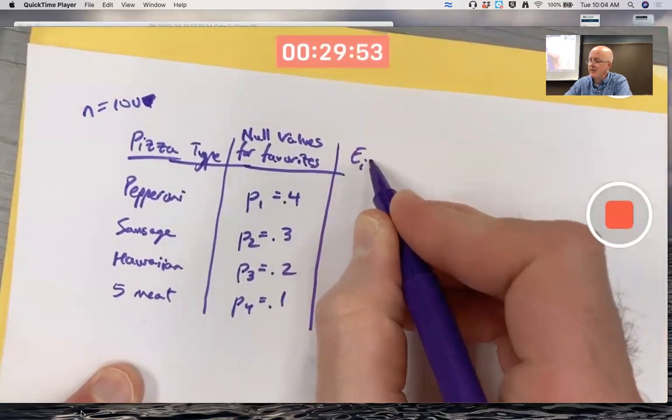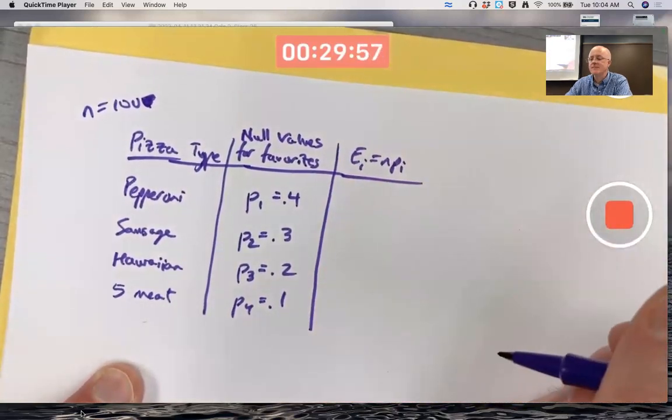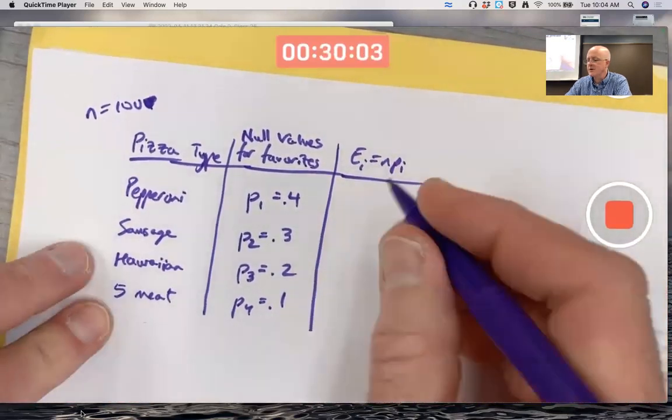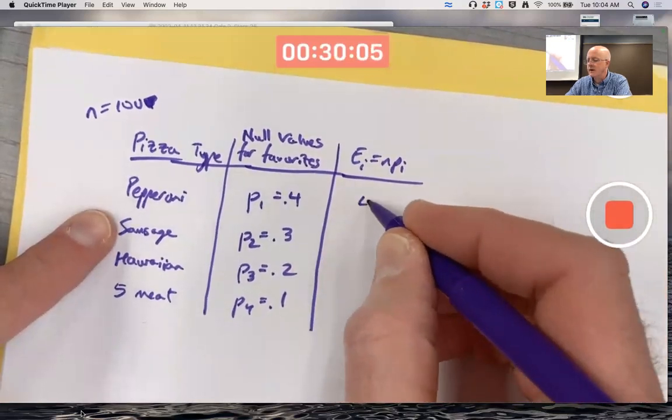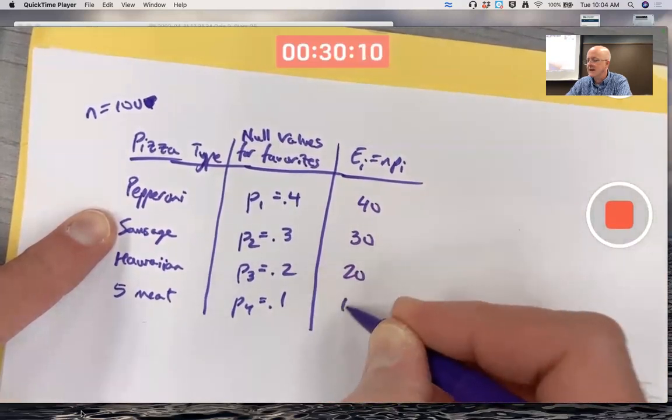You could call them Ei equals n times Pi as the book does in chapter 15. Assuming n is 100, multiply by these proportions: 100 times 0.4 is 40, 100 times 0.3 is 30, 100 times 0.2 is 20, 100 times 0.1 is 10.